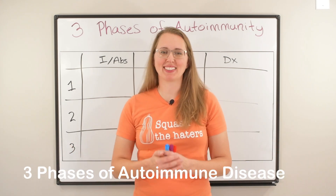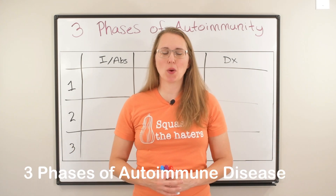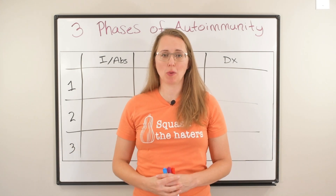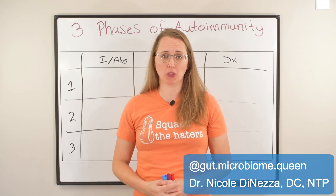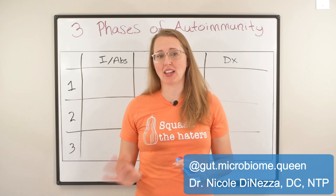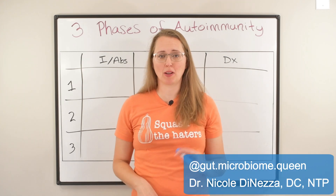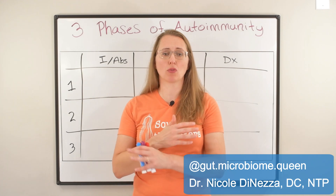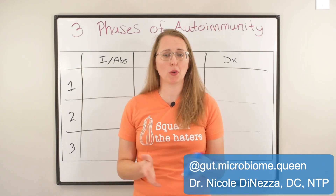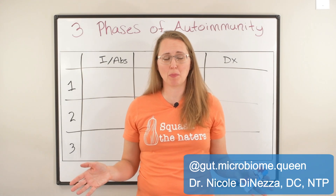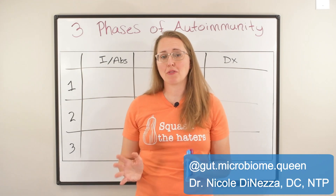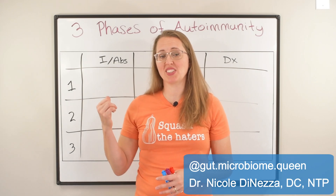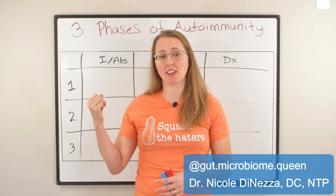Hello and welcome back. In today's video, we're going to be talking about the three phases that all autoimmune diseases go through. Yes, all of them. It doesn't matter if you're talking about Hashimoto's or celiac disease or the rainbow of autoimmunity in between those two examples. Every autoimmune disease on planet Earth is going to go through these three distinct phases.